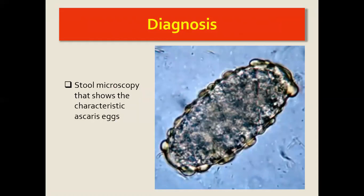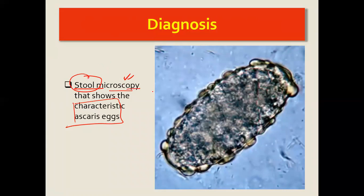Diagnosis is mostly done through stool microscopy, which shows the characteristic Ascaris egg. We take a stool sample, observe it under a microscope, and expect to see that characteristic egg morphology for Ascaris.